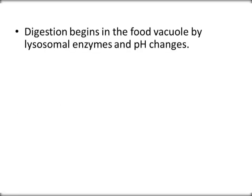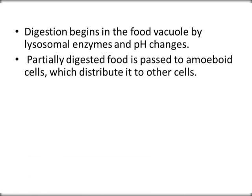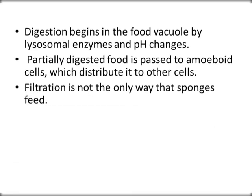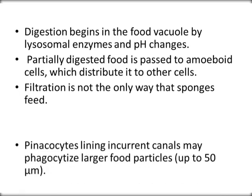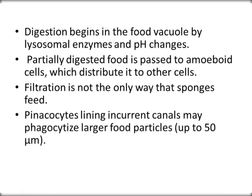The digestion begins in the food vacuoles by lysosomal enzymes and pH changes. Partially digested food is passed to the amoebocyte cells, which distribute it to the other cells. Filtration is not the only way sponges feed — the pinacocytes lining the incurrent canals may phagocytize large food particles up to 50 micrometers.